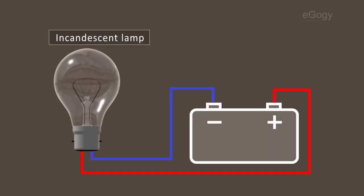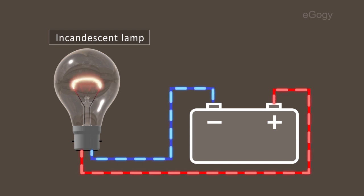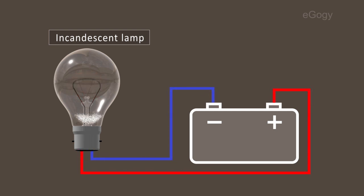How does an incandescent light bulb work? When electricity passes through the filament of the incandescent lamp, it becomes white hot and emits white light. The air inside the lamp is replaced by an inert gas to increase its life.